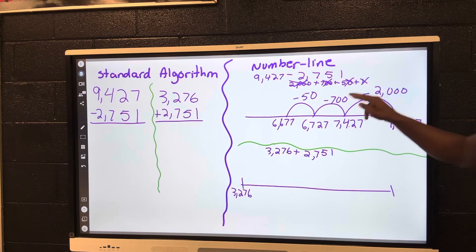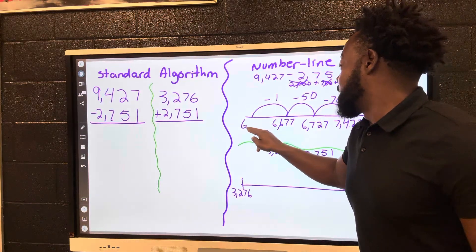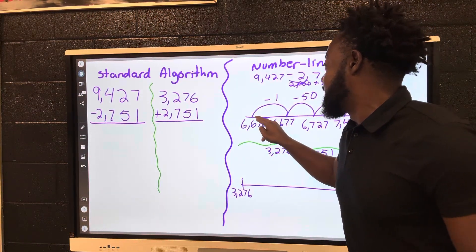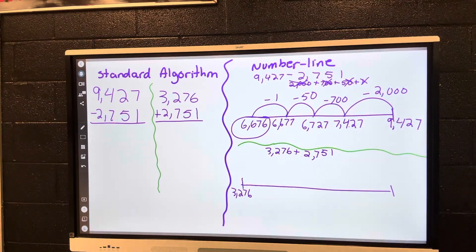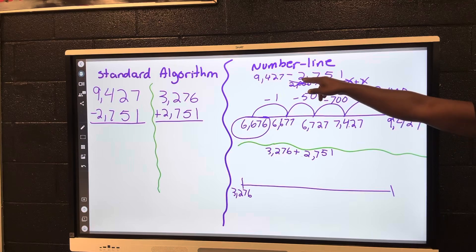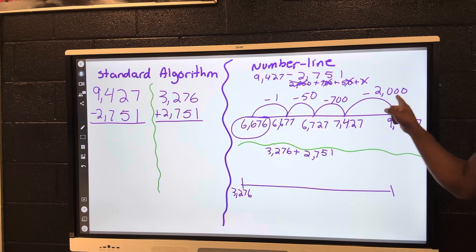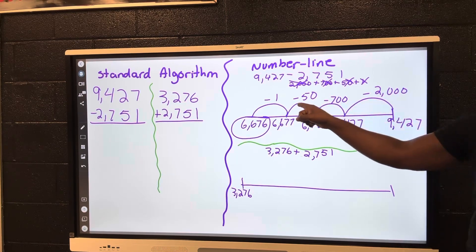We made all of our loops and we labeled our loops to show how much we actually went back by, and then we got to our answer. Now let's come over here and check our answer. We have to do our standard algorithm.